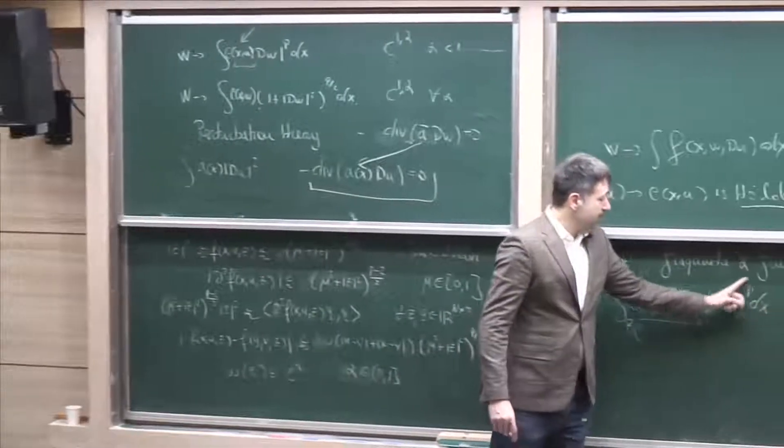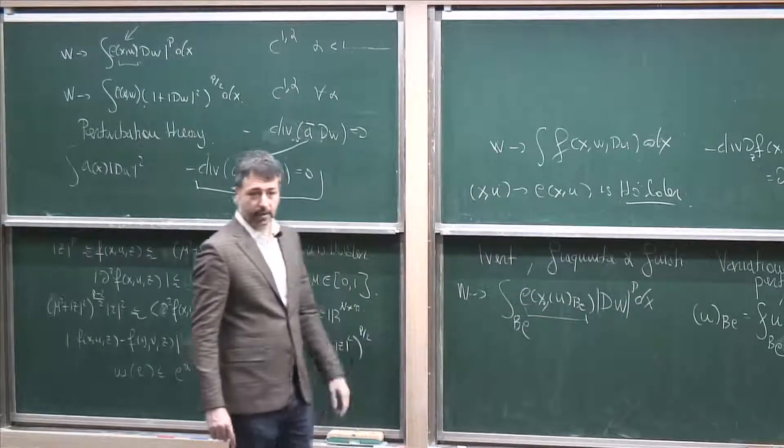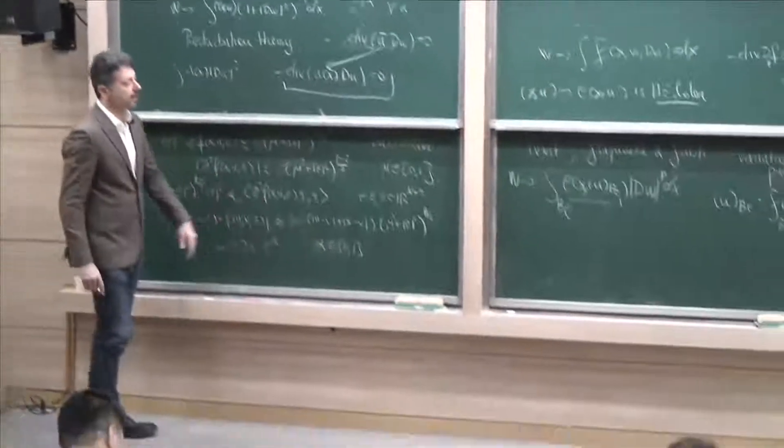And less than or equal than the exponent of the p-harmonicity here. This is, let's say, a nonlinear Schauder method.